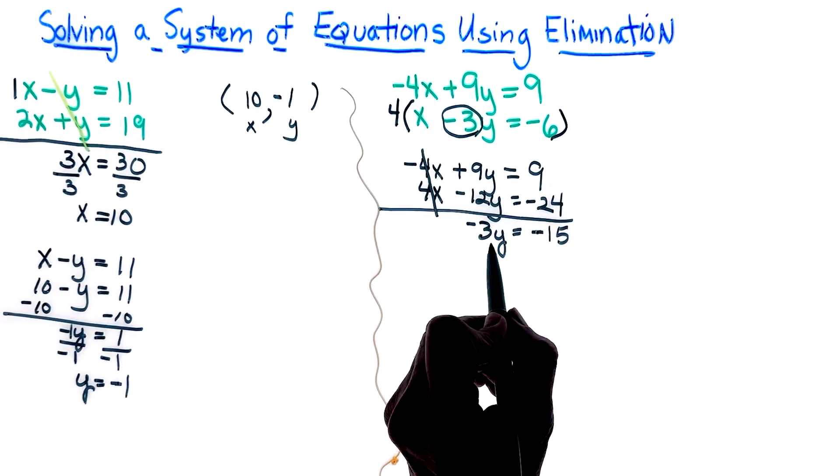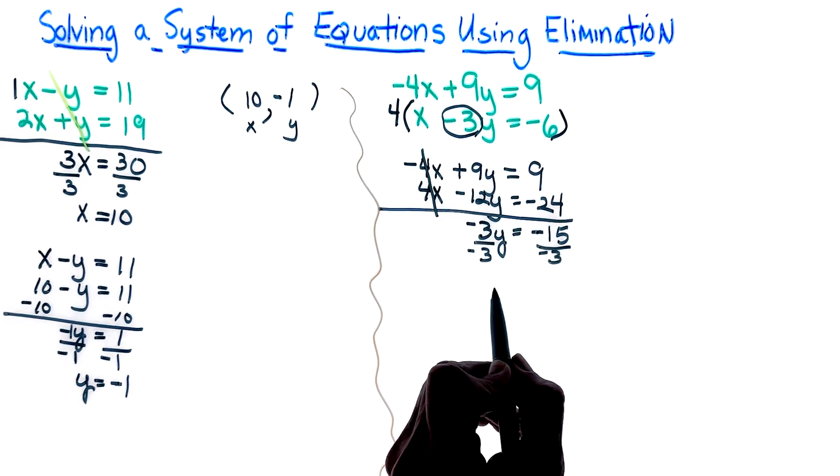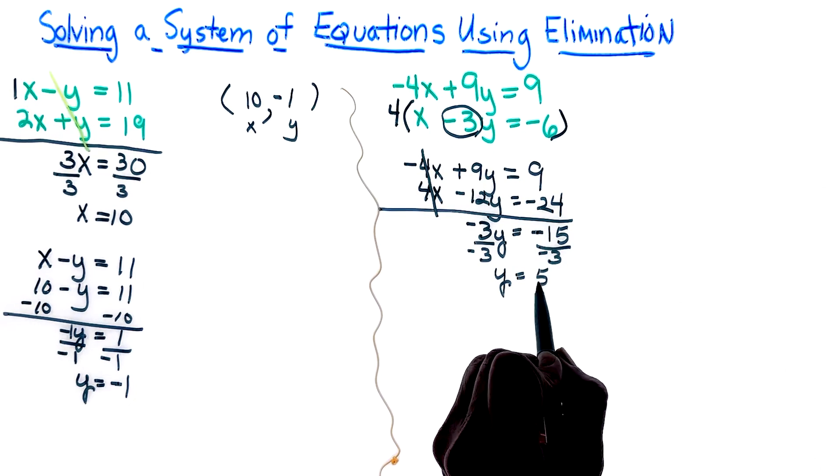Well, we know that we have to divide both sides by negative 3 to get the y by itself. So the y is equal to 5.